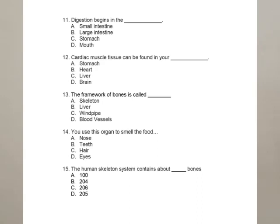Question 14: you use this organ to smell food. The four organs given are nose, teeth, hair, and eye. The nose is used for smelling, so nose is the right answer. Question 15: the human skeletal system contains about how many bones? The options are 100, 204, 206, and 205. The correct answer is 206 bones.